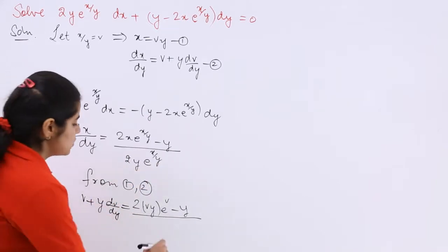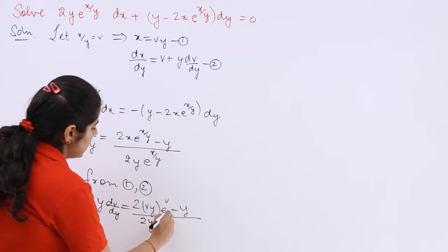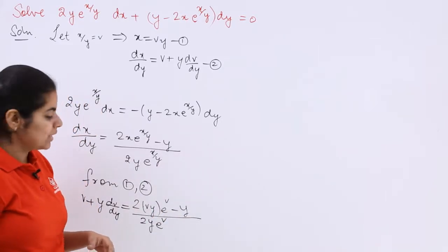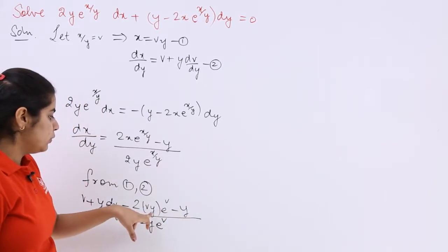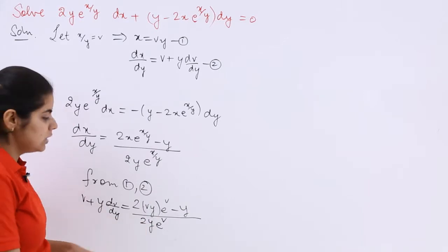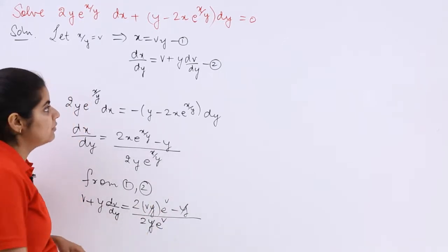2y is there. So 2y as it is e raised to the power x upon y is v. Now see what has to be done? Now you can simply see y getting common. So y will become common and will become cancelled from everywhere.